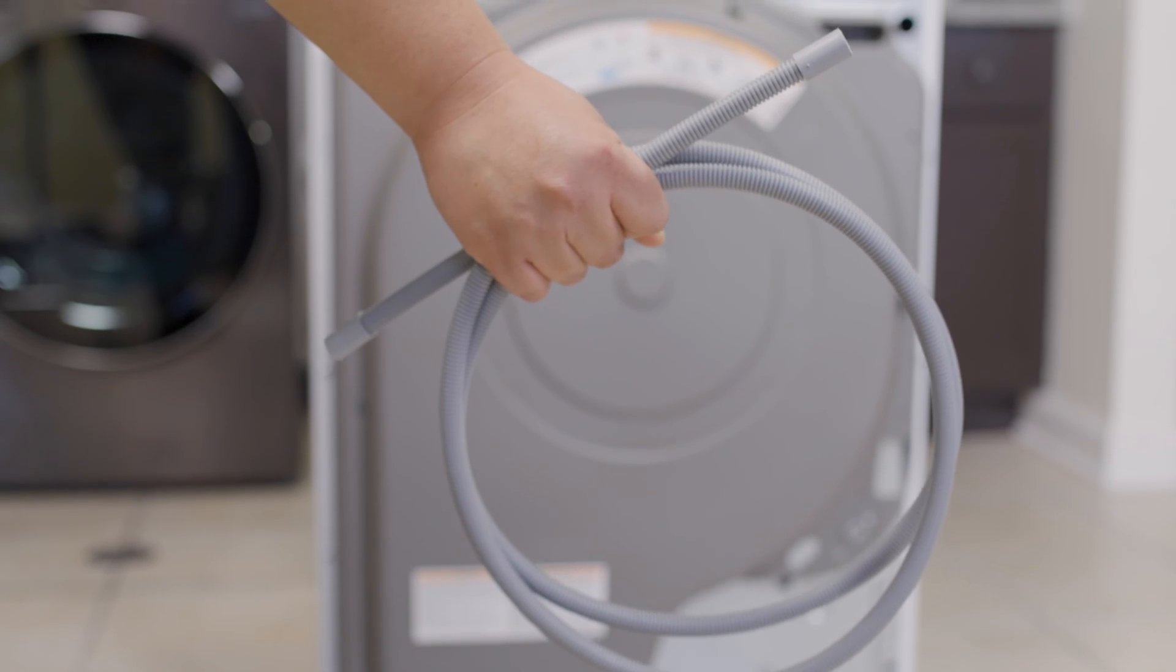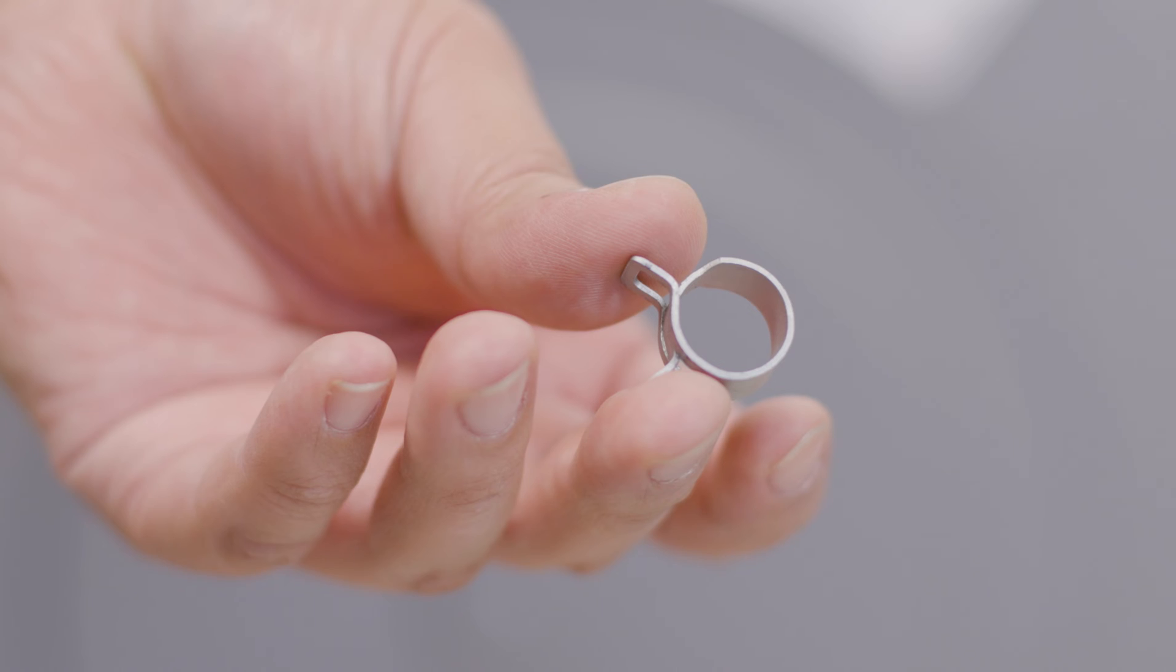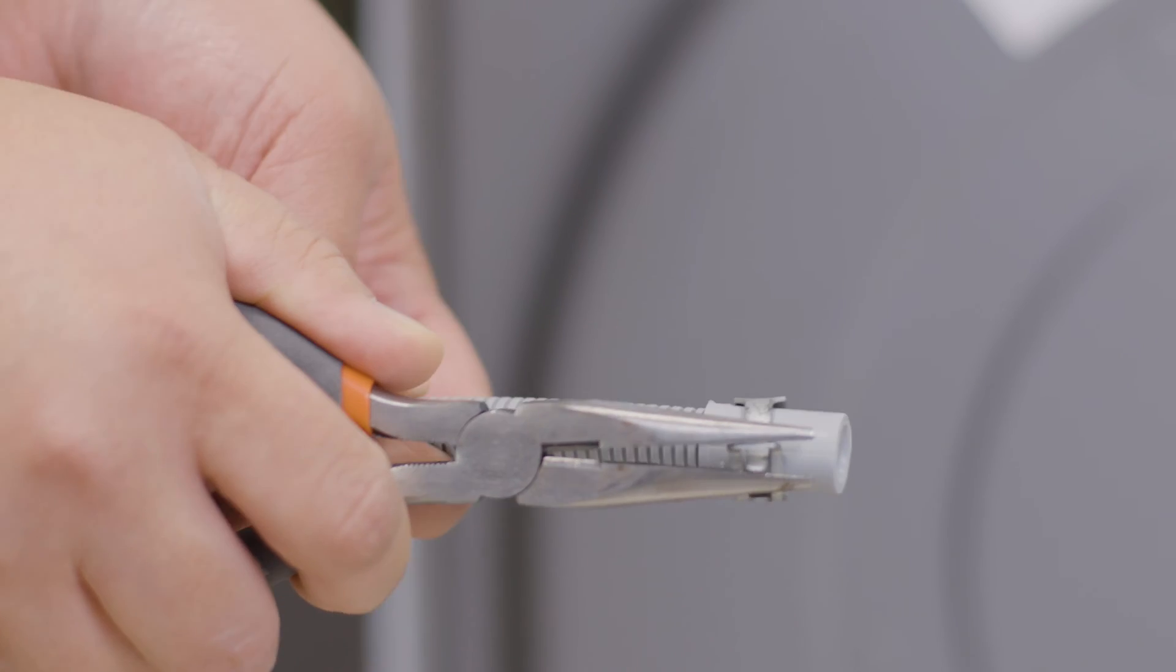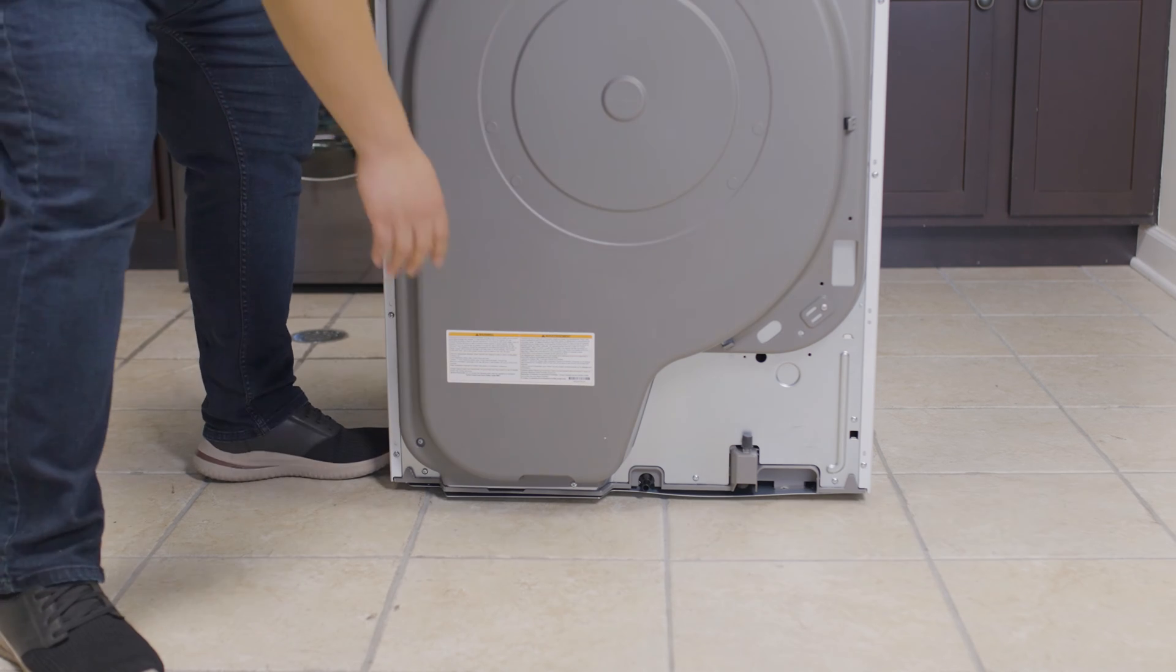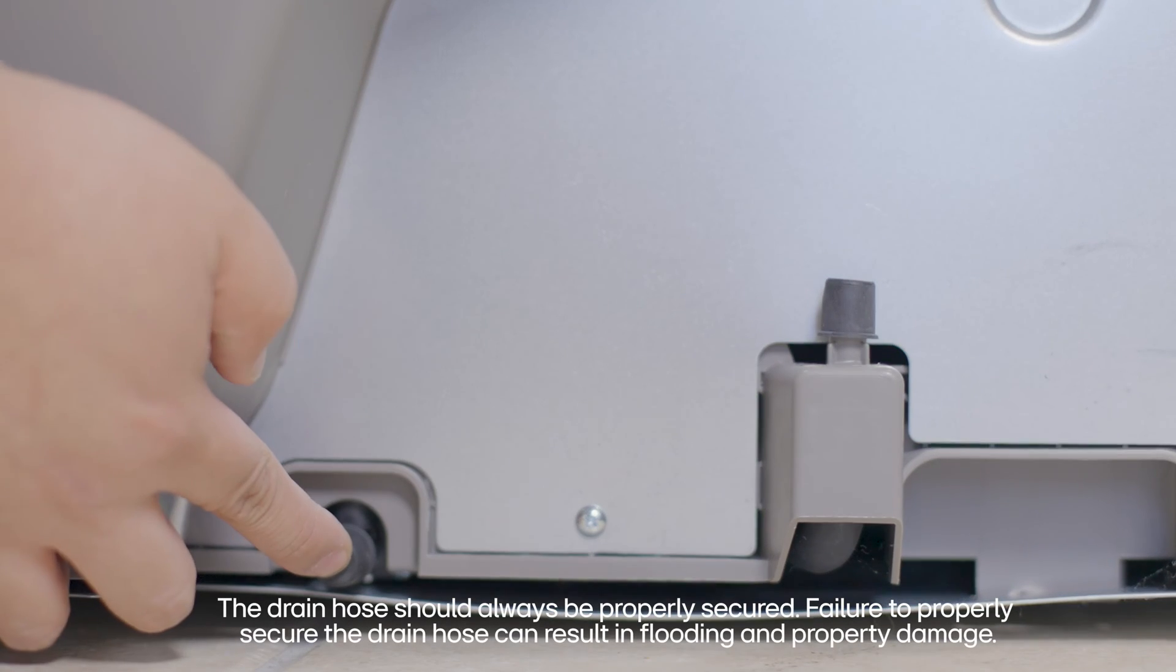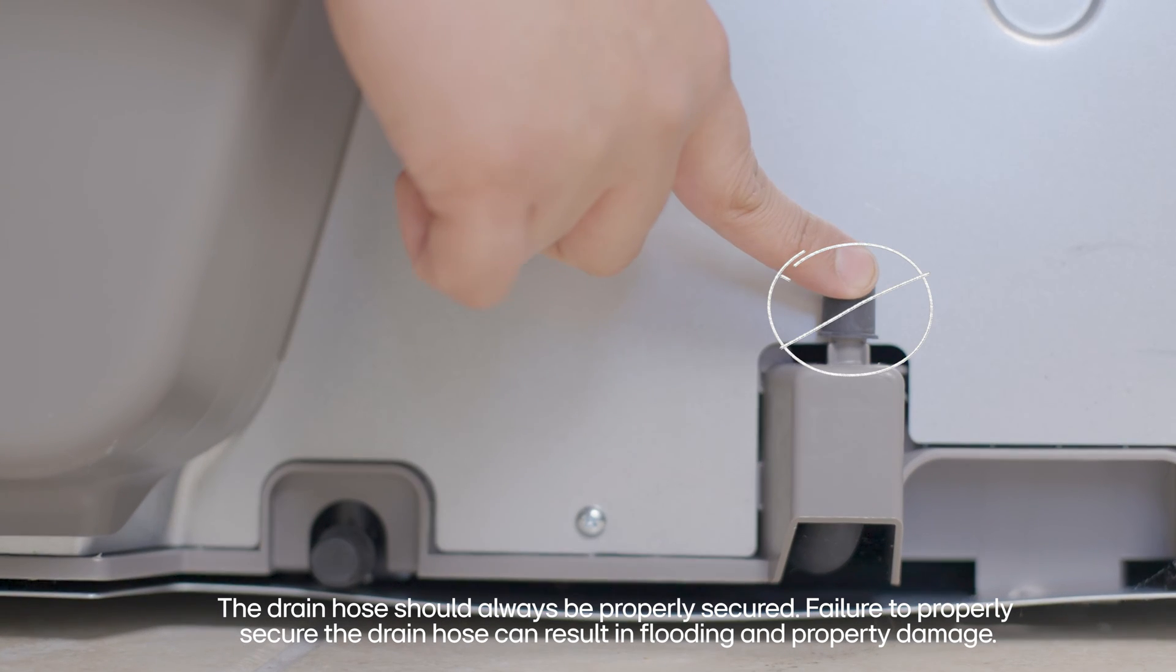Take the provided hose clamp and using needle nose pliers, put it over the drain hose. This is where you will install the drain hose, and this is where you will not install the drain hose. Do not install the hose on this valve.